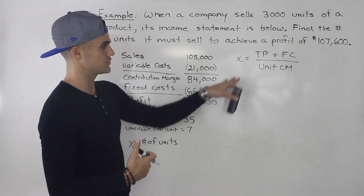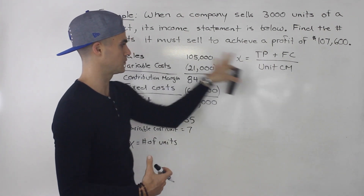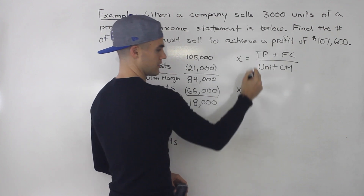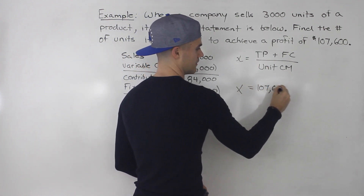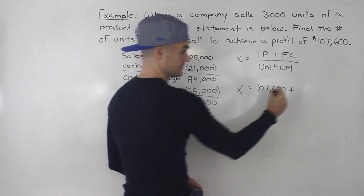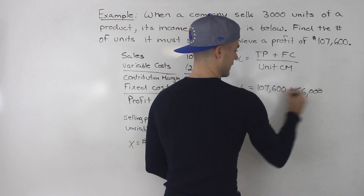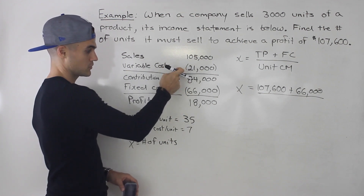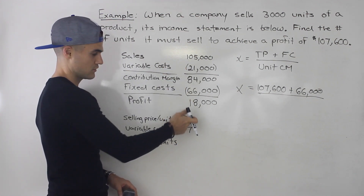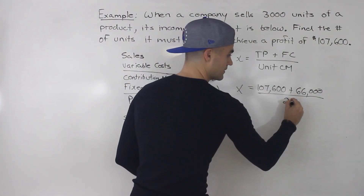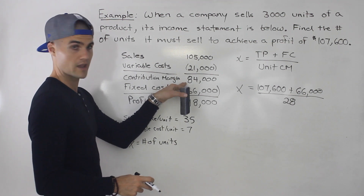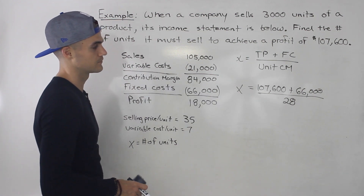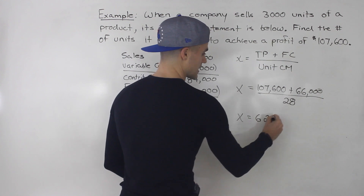That was one way to do it. What if we use the formula directly with the same information? Plugging in: target profit is $107,600, fixed cost is $66,000, and for the unit contribution margin you can either take $35 minus $7 to get $28, or take the total contribution margin of $84,000 divided by the production level of 3,000 — that also gives you 28. Either way, you end up getting that same figure of 6,200.